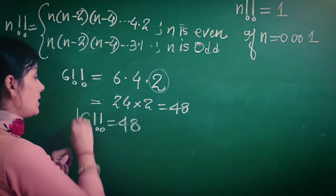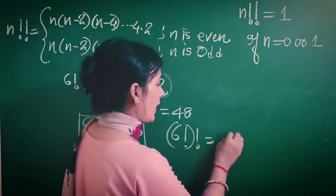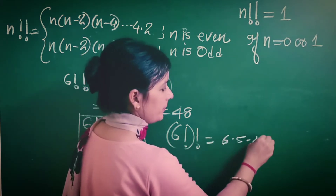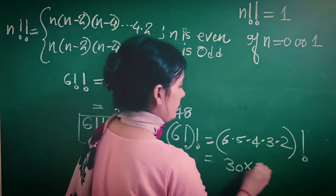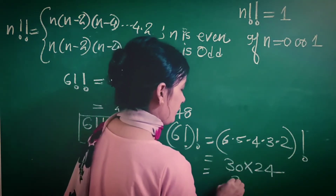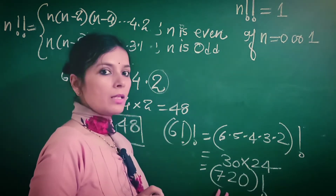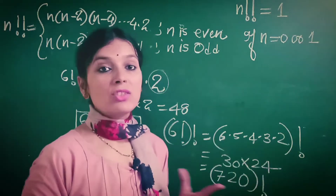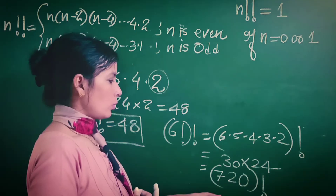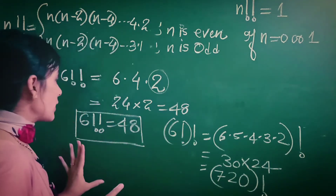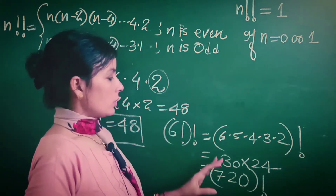Whereas if we tried to compute 6 double factorial as 6 factorial factorial, 6 factorial is 720, and then 720 factorial — imagine the complication of trying to find that. It is beyond any reasonable limit. So 6!! is definitely not 6 factorial factorial.